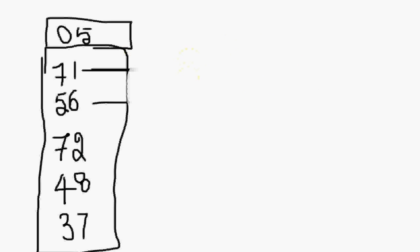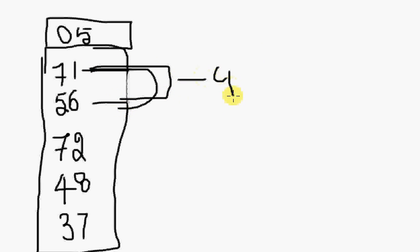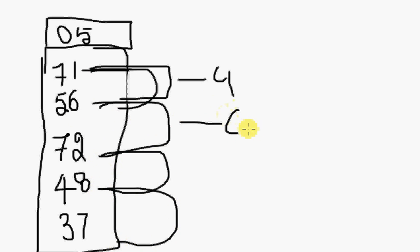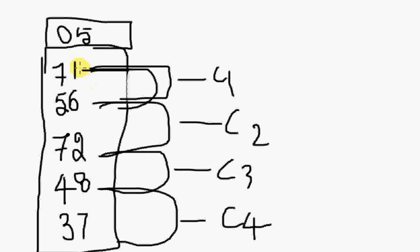How many comparisons are you going to do? You have to bring data into the processor registers to compare them. Compare 1, then compare 2, compare 3, and compare 4. The array size is 5, so the number of comparisons per pass is 4 — that is, array size minus 1. That is very clear.